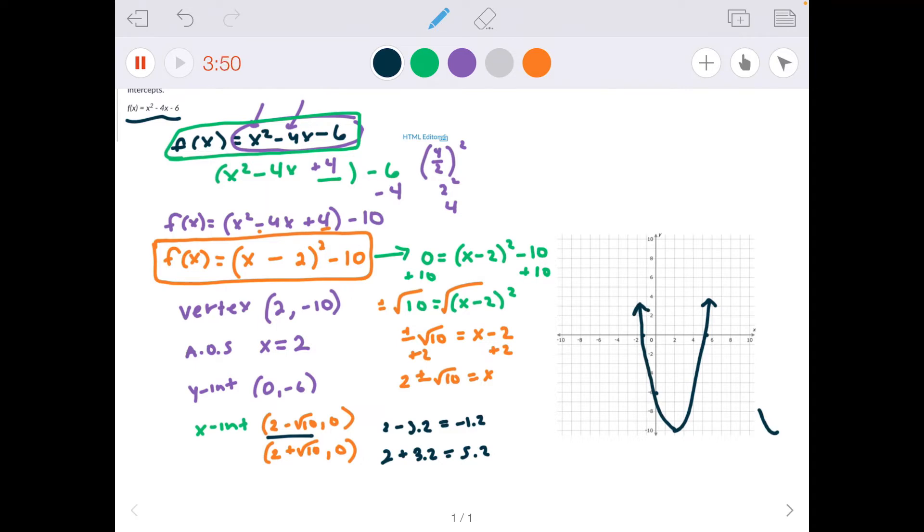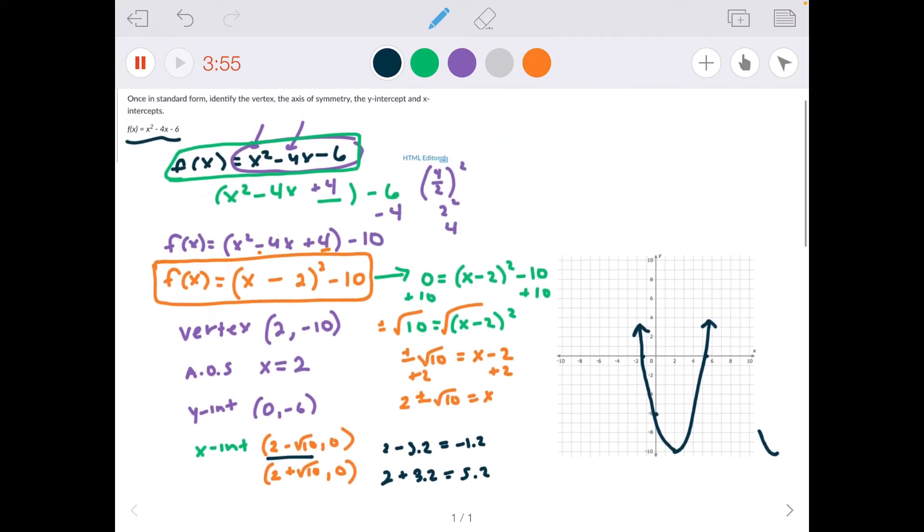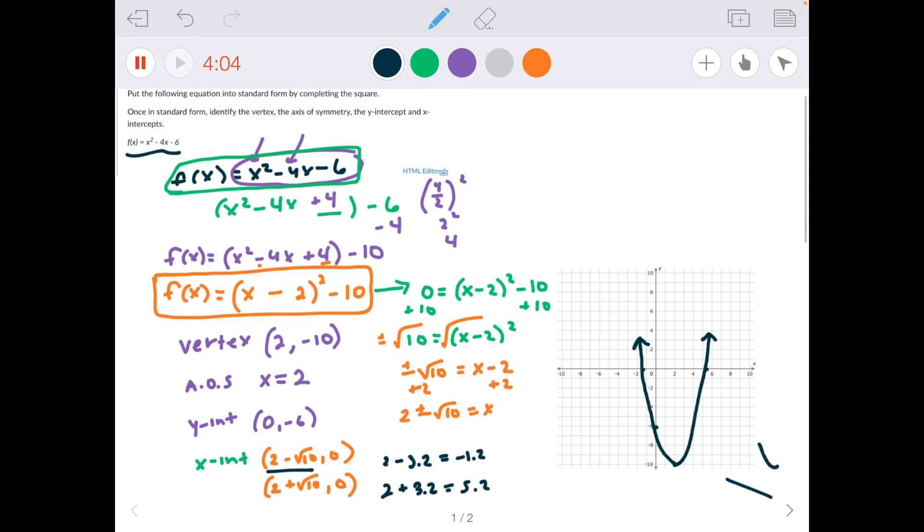If you need more space on Educreations, you can use two fingers to swipe up and down. If I need to add a new page, I click the arrow on the bottom right, and it gives me a new page. As soon as you're done with your video, you want to hit the pause button on the top left. And then you want to hit the square with the arrow pointing to the left. And it's going to ask you, do you want to save the draft or save the finished video?